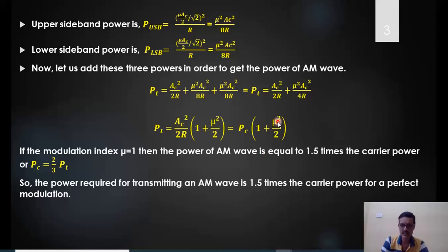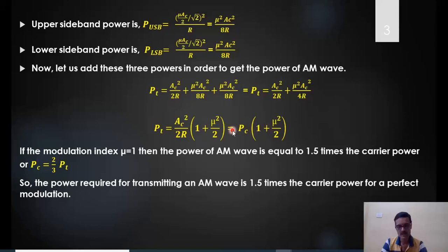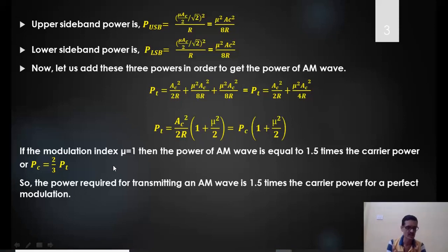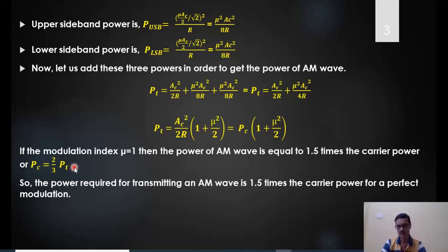The highest value of μ is 1. Substituting μ = 1, the total power becomes PT = (3/2)PC, or 1.5 times PC. Rearranging, PC = (2/3)PT. This indicates that the unmodulated carrier — which does not convey any information — requires two-thirds of the total power. Only the remaining one-third is the power required to transmit the sidebands, making the carrier power essentially wasted.